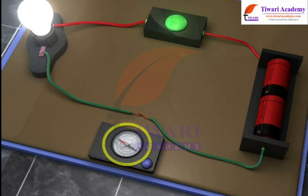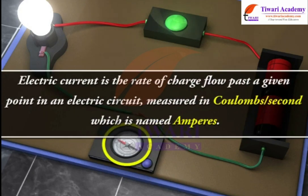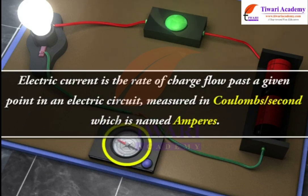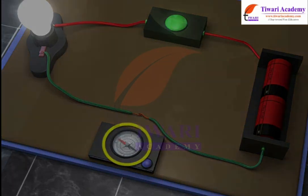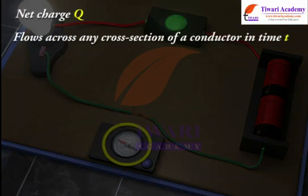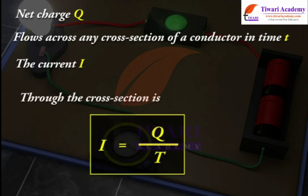It can be said that there is a current, a flow of charge within the circuit. Electric current is the rate of charge flow past a given point in an electric circuit, measured in coulombs per second, which is named amperes. If a net charge Q flows across any cross section of a conductor in time t, then the current I through the cross section is I = Q / t.